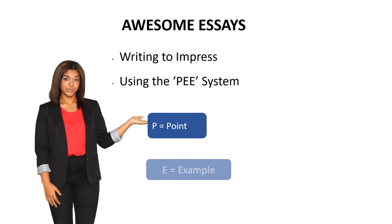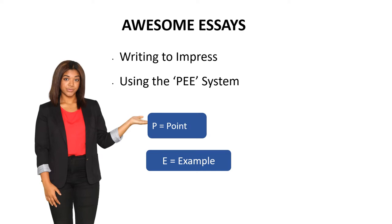The first P stands for point — you're going to make your point. The second element, E, is evidence: you're going to take an example from the poem and put it in quotations as your evidence for the point that you're making. For example, if your point is that the poem had a simile as a literary device, then you're going to give the example that the simile was represented when the poet said, 'the river roared like a tiger.'